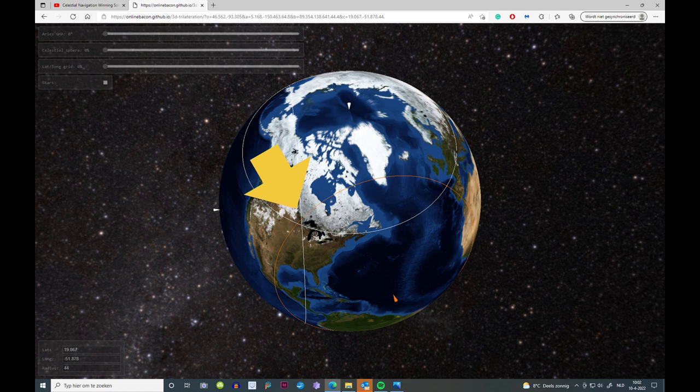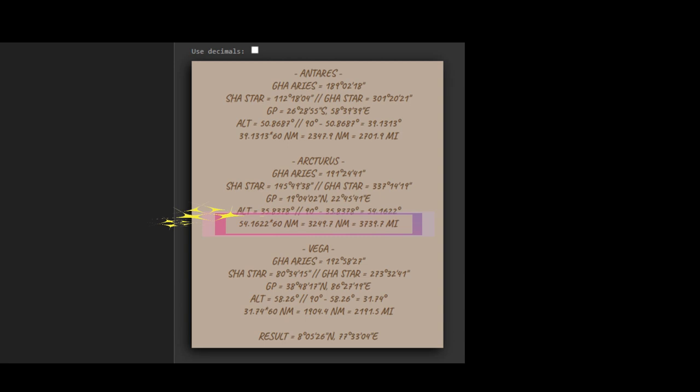Notice also that the distance to the GP of the star to the observer is calculated using the 60 nautical miles per degree formula. In my previous video I demonstrated that this formula cannot work on a flat earth.